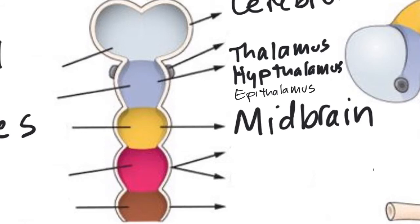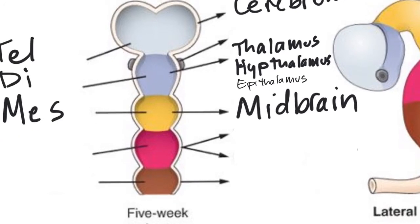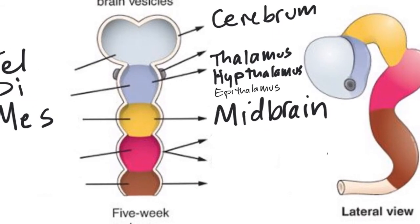The pituitary gland is also part of the diencephalon. You also have the eye cup — or optic cup — visible here, which eventually becomes your retina. So the retina has central nervous system origin but then migrates away from it and becomes an accessory structure to the brain.